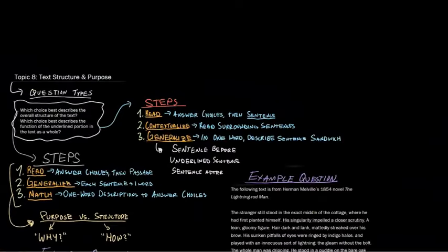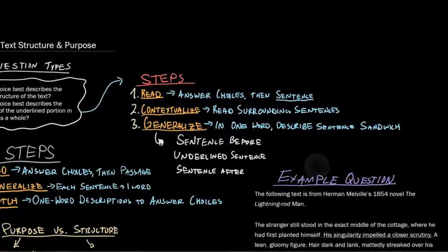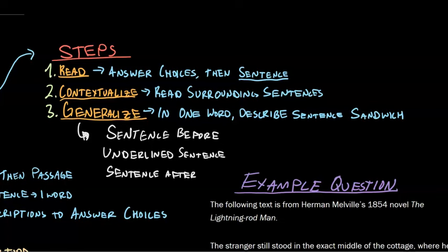Now let's take a look at a different problem. Kind of similar. Which choice best describes the function of the underlined sentence as a whole? So the first thing you read here is you read the answer choices. Then you read the sentence. You just read the sentence. And then you read the surrounding sentences. So we're going back to the sentence sandwich. And then we're going to do in one word. We're going to describe our sentence sandwiches. So each of these words is going to have one sentence description. Our sentence sandwich is the sentence before, the underlined sentence, and the sentence after.